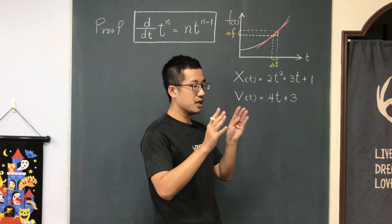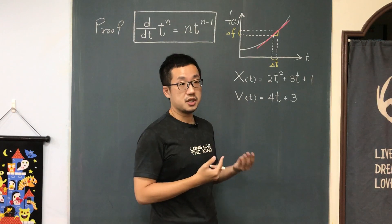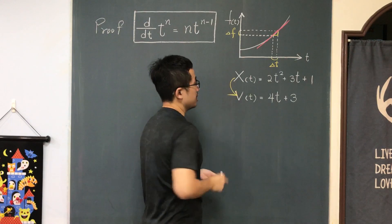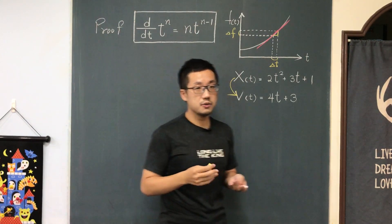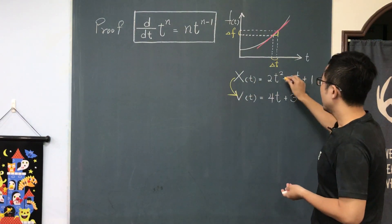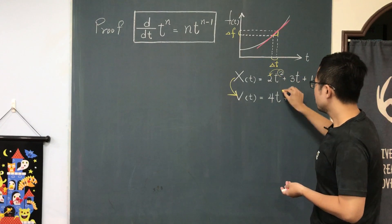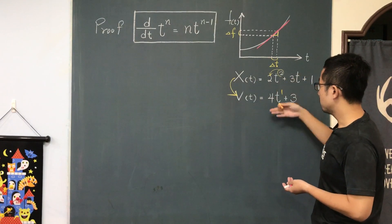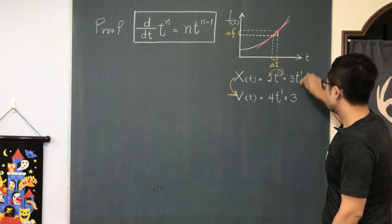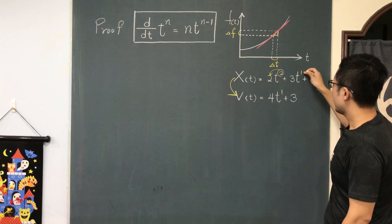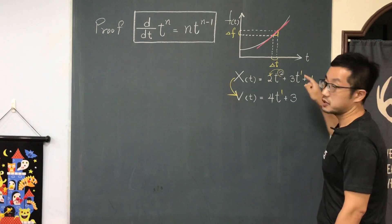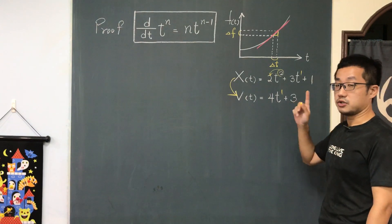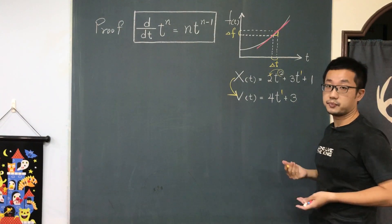Since x as a function of time is too complicated to predict what kind of motion it might be, we would like to take the derivative of x(t), which turns out to be the velocity as a function of time. To do the derivative, we multiply each term by its power and subtract 1 from its power. So 2t² becomes 4t, and 3t becomes 3 when you take the derivative.